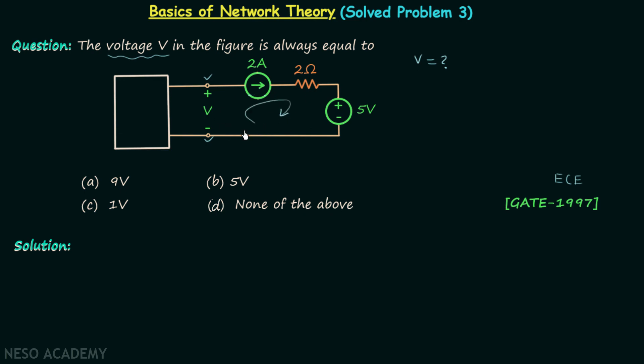In this loop we have one 2 ampere current source, one 2 ohms resistor, and one 5 volts voltage source.